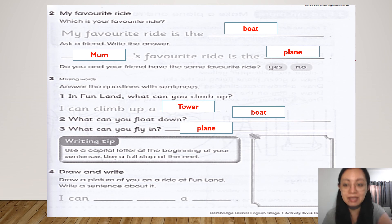For example, I have here my answers. My favorite ride is the boat. And then mom's favorite ride is the plane. Now, do we have the same favorite ride? No. I can climb up which one? In the fun land? The tower. Very good. What can you float down? The correct answer is boat. What can you fly in? What's the correct answer? Plane. So, this time, this part is for you. Use a capital letter at the beginning of your sentence and use full stop at the end. I can, what can you do? Let's say, for example, I can float down a boat. You're going to draw yourself with the boat. I will wait for your drawings, kids.